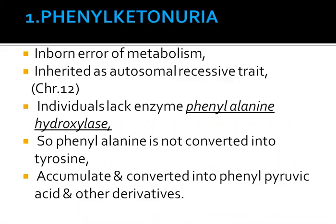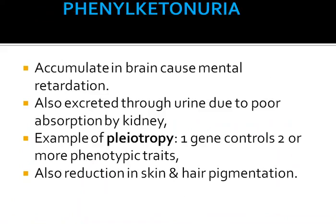Such individuals lack an enzyme called Phenylalanine hydroxylase, which is essential for the conversion of the amino acid Phenylalanine into Tyrosine. Since Phenylalanine is not converted into Tyrosine, it accumulates and is converted into Phenylpyruvic acid and other derivatives. These compounds accumulate in the brain and cause mental retardation. They are also excreted through urine due to their poor absorption by the kidney.